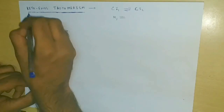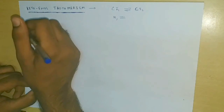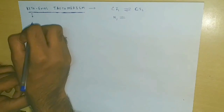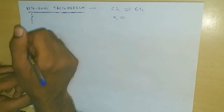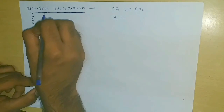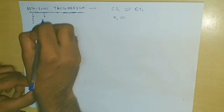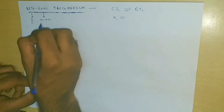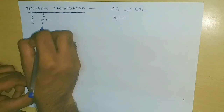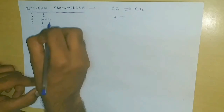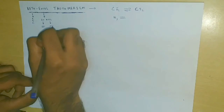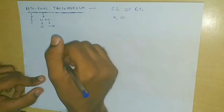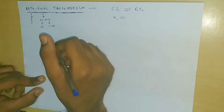Coming to the terms Keto and Enol: Keto represents the compounds containing the carbonyl group, such as aldehydes and ketones. Enol is a combination of two terms — En and Ol — where En stands for a double bond like we see in alkenes, and Ol stands for the alcohol functional group. That means in an Enol compound, the same carbon will bear the double bond as well as the alcohol functional group.